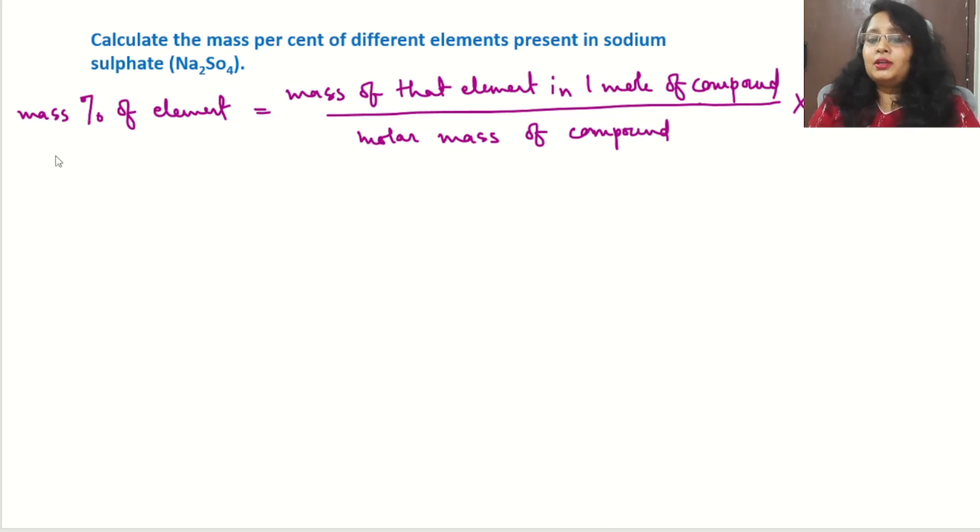So here we have sodium sulfate, and there are three elements present in sodium sulfate: sodium, sulfur, and oxygen. First of all, we will get the molar mass of the compound.